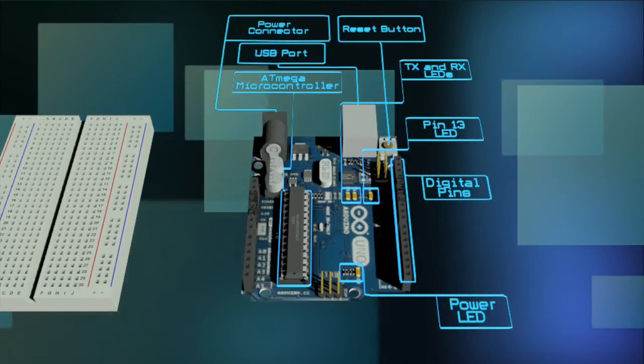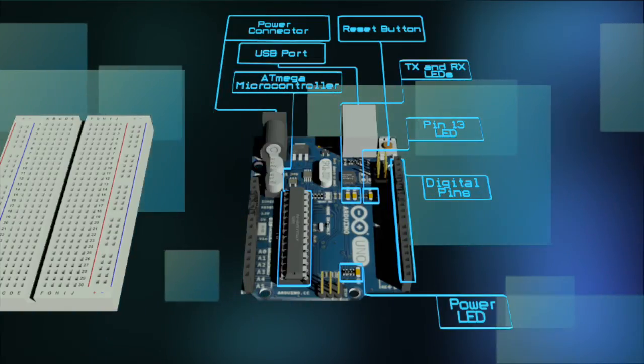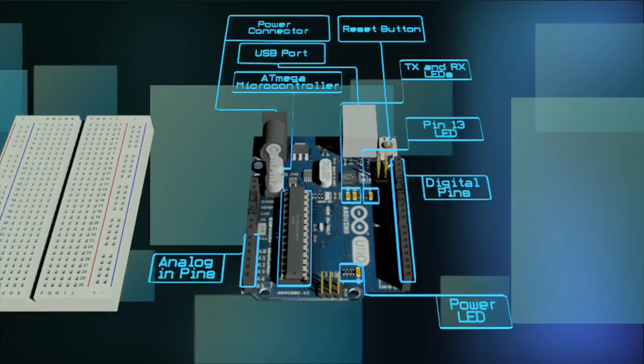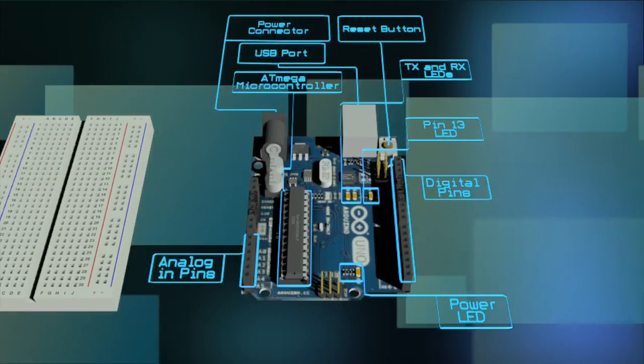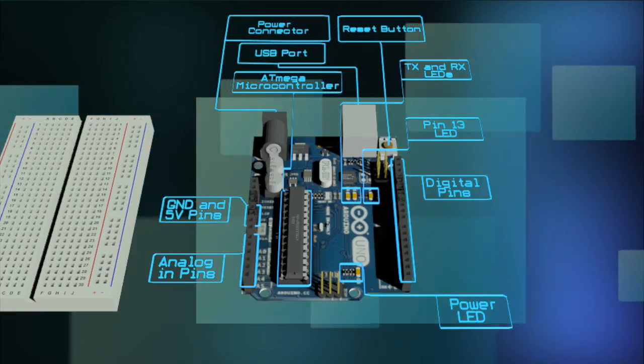The pin 13 LED is the only actuator built into the Arduino Uno. This LED is very useful for debugging. On the bottom left you see the analog in pins, and you use these pins with analog read. Finally, the ground and 5 volt pins provide 5 volts of power and ground to your circuits.